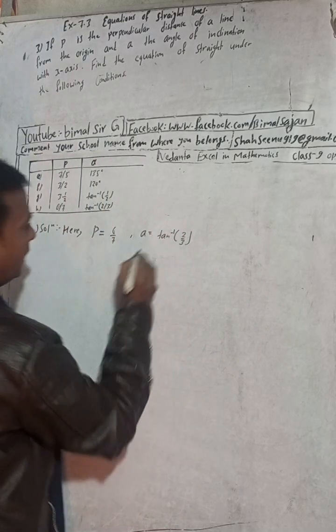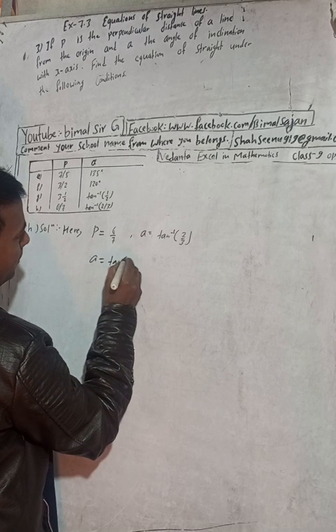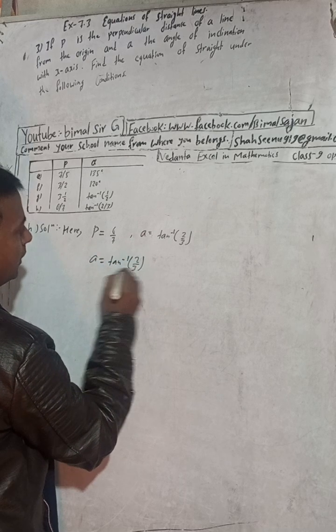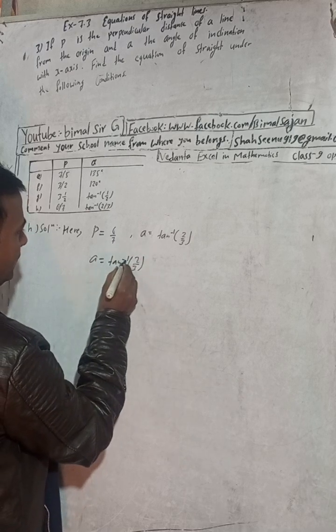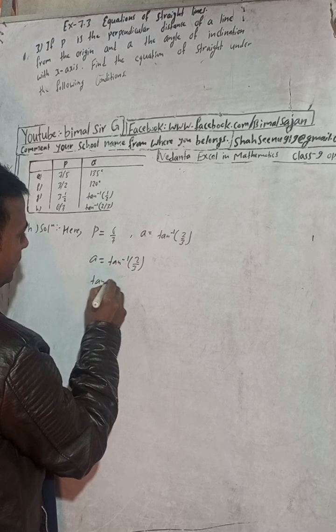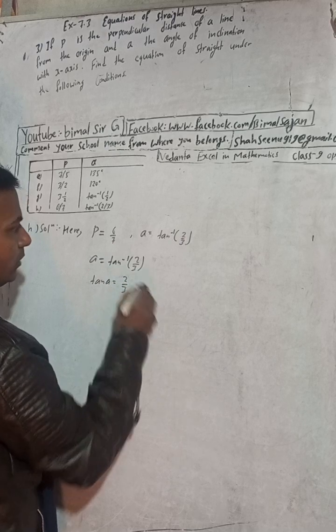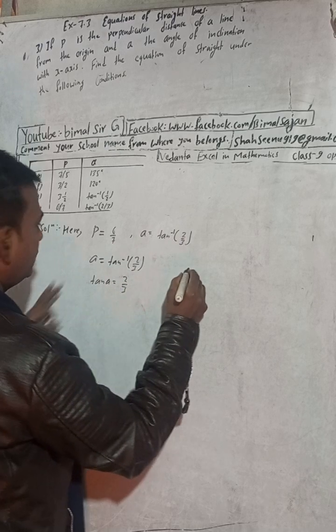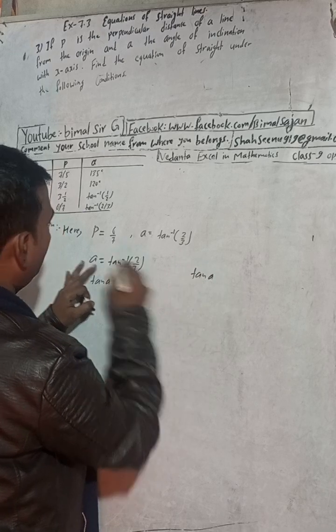Now here we can write alpha is given here as tan inverse 2/3. This can be solved in two ways. Directly you can write tan alpha is equal to 2/3. Otherwise, what you do here, take tan on both sides.